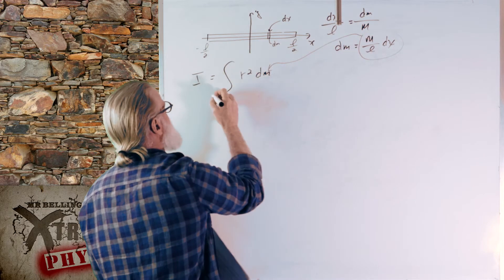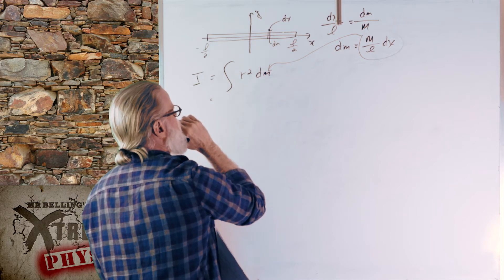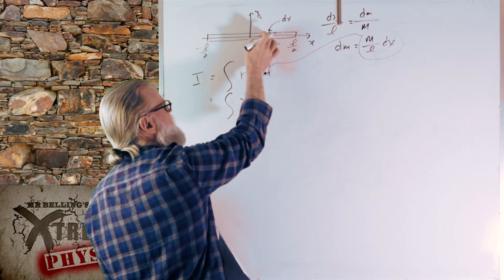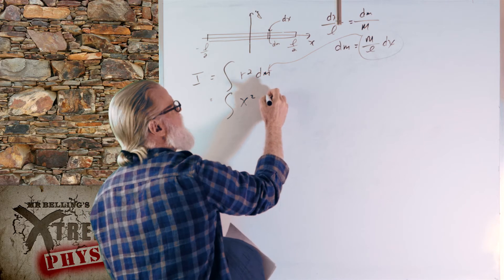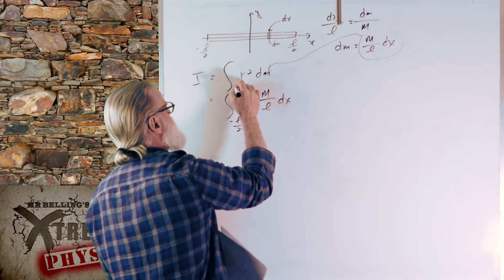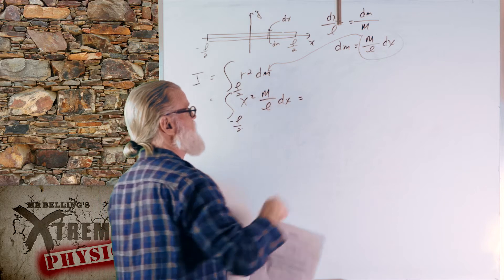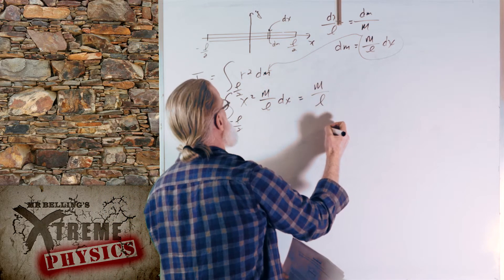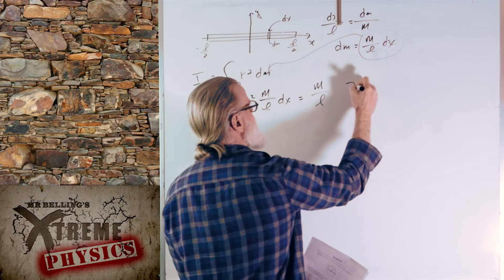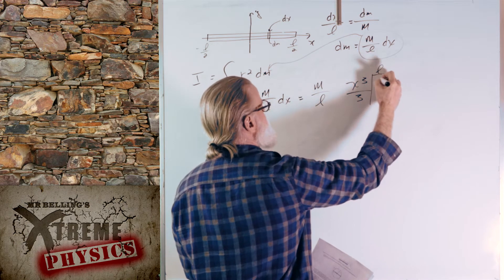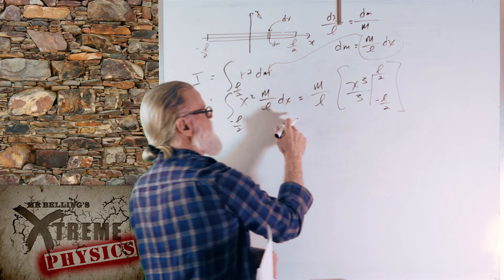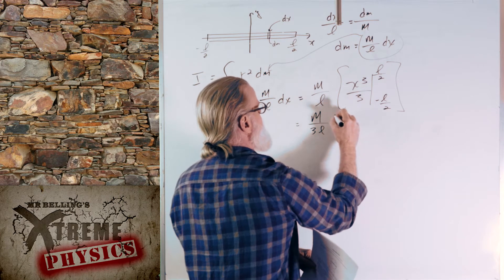Substituting that in, our r is x, so the integral becomes x squared times M over L dx, and we're going from negative L over 2 to positive L over 2. Factoring out M over L as a constant and integrating, x squared dx gives x cubed over 3, evaluated from negative L over 2 to L over 2. Bringing out the 3, we get M over 3L times the bracket.